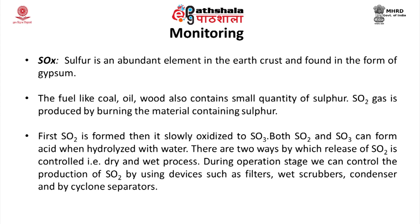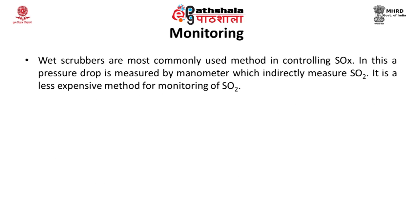There are two ways by which the release of SO2 is controlled: the dry process and the wet process. During the operation stage, we can control the production of SO2 using devices such as filters, wet scrubbers, condensers, and cyclone separators. Wet scrubbers are the most commonly used method for controlling SOX. In this method, a pressure drop is measured by a manometer, which indirectly measures SO2. It is a less expensive method for monitoring SO2.